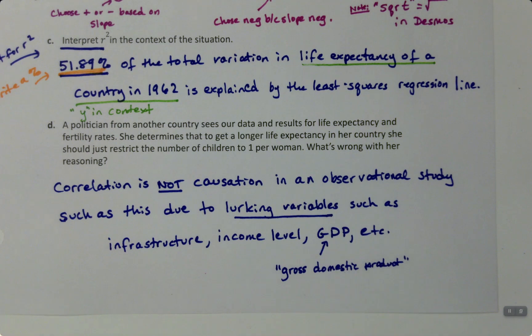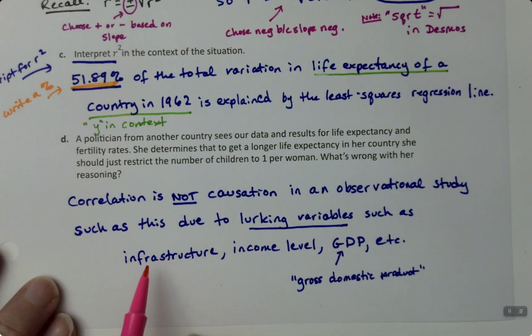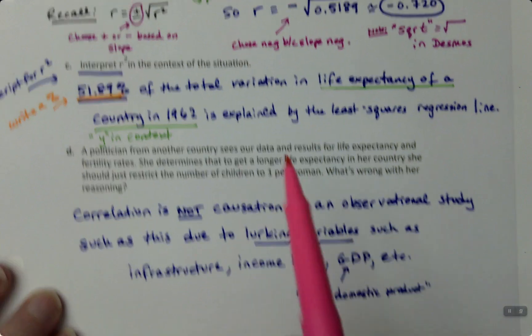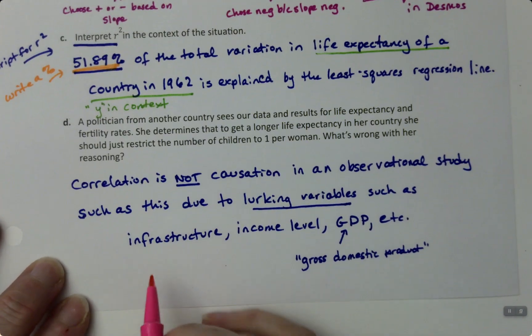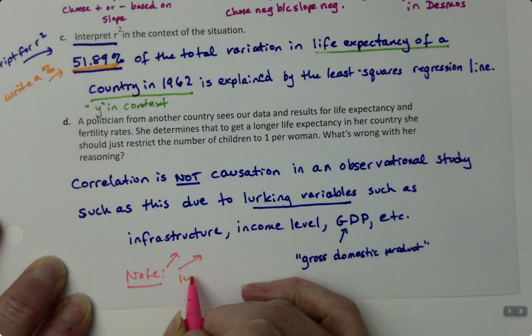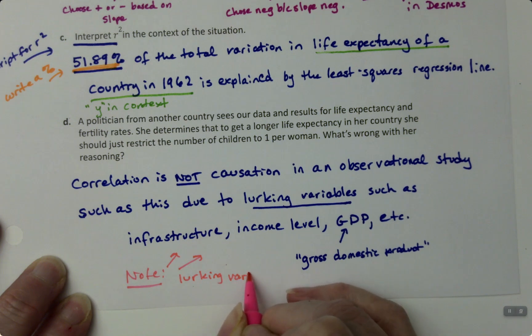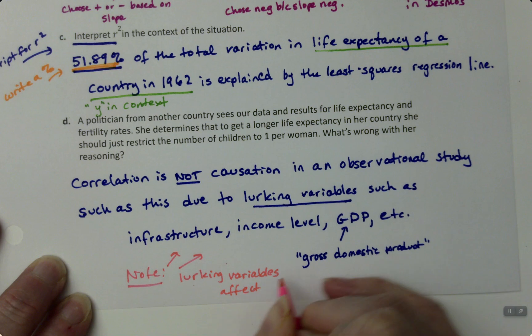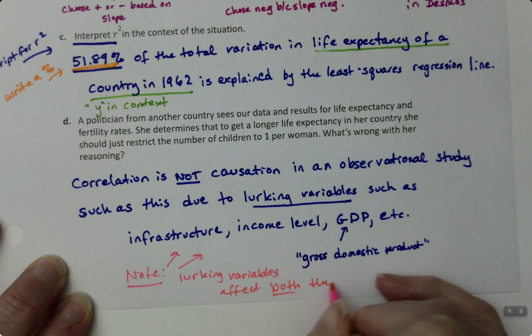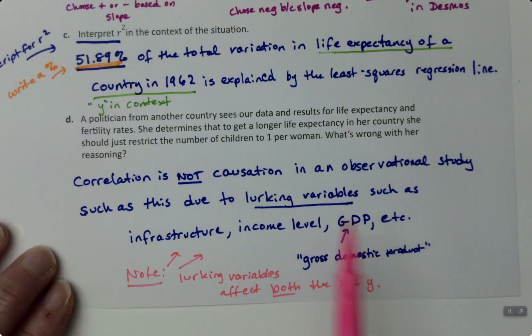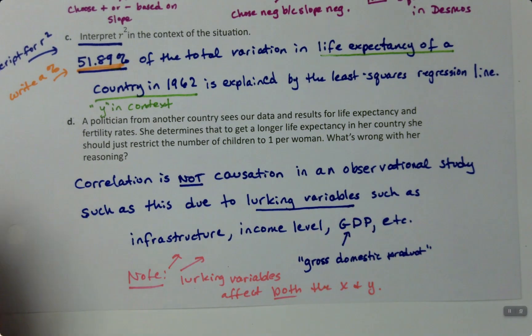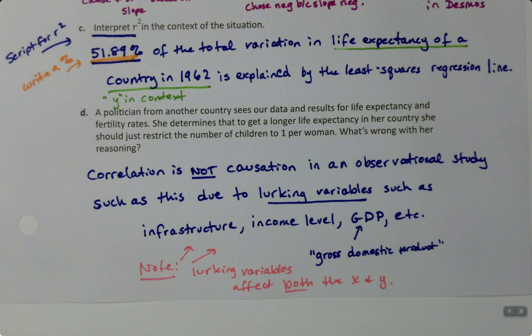You don't have to list all of these, by the way. Usually in a problem that's asking you about this, you just have to think of one good one. But remember that it's something that has to affect both the X and the Y. And that's what a lot of students forget. They'll think of something that just affects life expectancy like the number of doctors, but they won't think of things that affect the fertility rate as well. Right? So note, you have to think of things - lurking variables that are valid - affect both the X and the Y. Right? The X in this case being fertility and the Y being life expectancy. A good lurking variable has to, or should, affect both of them.